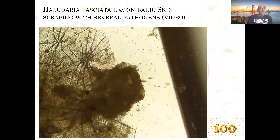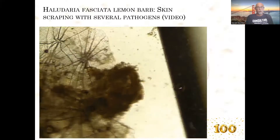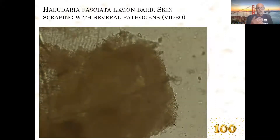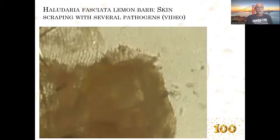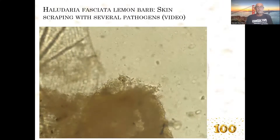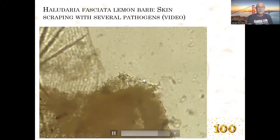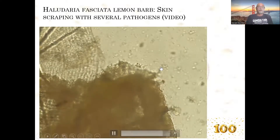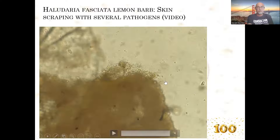Here you see a part of the skin scraping. You can see all the little creatures moving around in the water. At a larger magnification you can see there are some parasites moving around. You also see the necrotic tissue with bacteria — some are columnaris bacteria. You can see at the edge some tubifex-like growth which is columnaris bacterial strains.